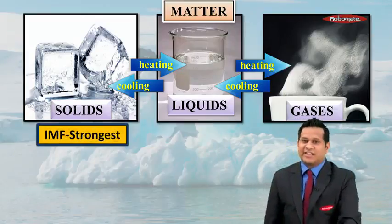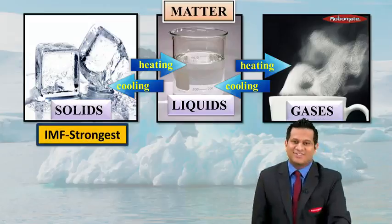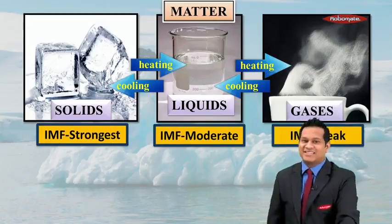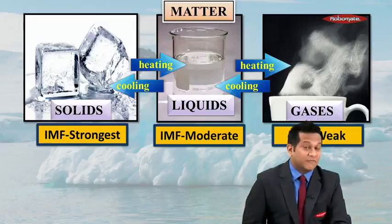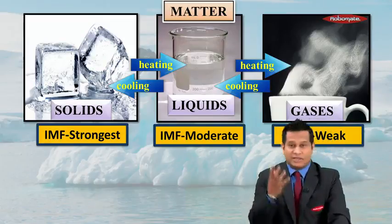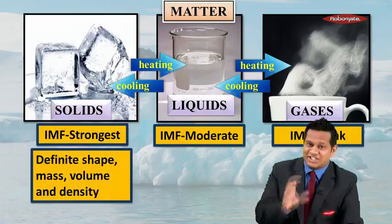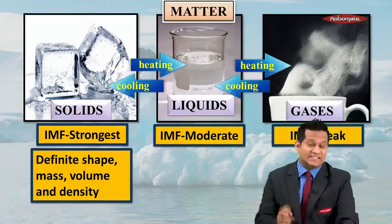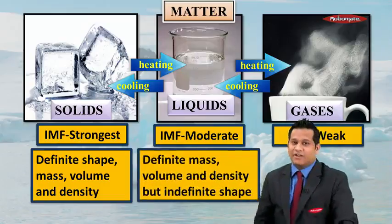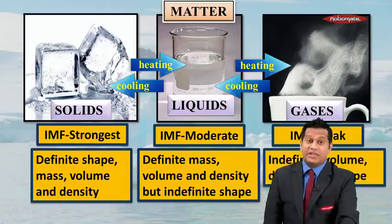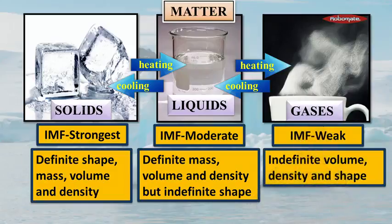In solids, the intermolecular force of attraction (IMF) is the strongest; in liquids it is moderate; and in gases it is weak. In terms of mass, shape, density, and volume — solids have a definite shape, definite mass, definite volume, and definite density. Liquids have definite mass, definite volume and density, but an indefinite shape. Gases have indefinite volume, indefinite density, and indefinite shape.